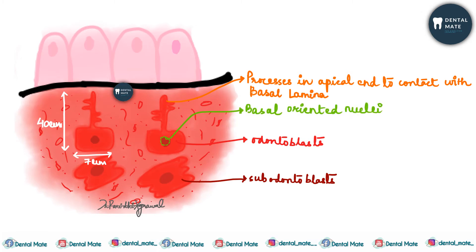The odontoblasts have basally oriented nuclei. These cells contain proline, which appears in the rough endoplasmic reticulum and the Golgi body. It then migrates into the cell processes in dense granules and is emptied into the extracellular collagenous matrix of predentine.